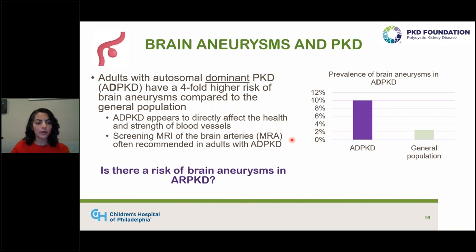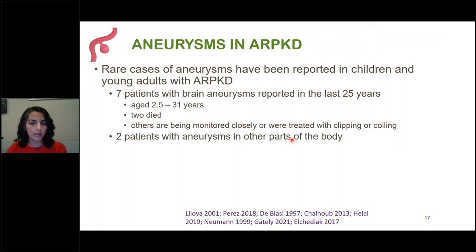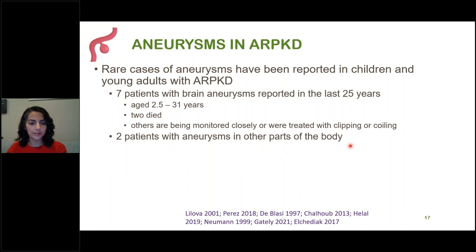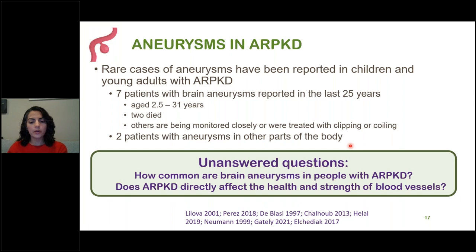What do we know about brain aneurysms in AR PKD? There have been rare cases reported in children and young adults — a total of seven patients with brain aneurysms reported over the last 25 years, ranging in age from 2.5 to 31 years. Sadly, two of those individuals passed away, and others were monitored closely or treated with clipping or coiling. There have also been two other patients reported with aneurysms in other parts of the body. Key questions are: how common are brain aneurysms in AR PKD, and does AR PKD directly affect blood vessel health and strength?